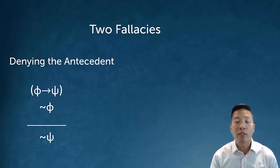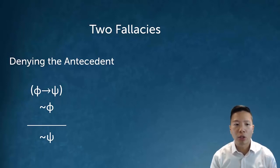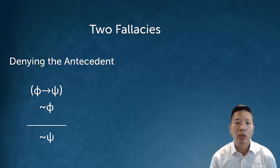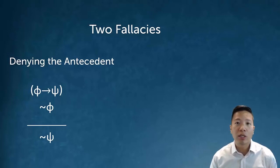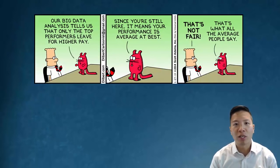It turns out there are two common mistakes made with conditionals — very common fallacies. The first is denying the antecedent, which says: if we have a conditional and we know that the antecedent is false, we can conclude that the consequent must be false too. Well, that's actually bad reasoning. Here's a Dilbert comic illustrating the point: Catbert says that if you leave the company, that means you must have been a top performer.